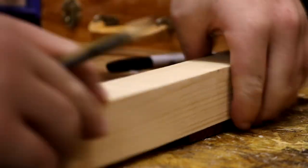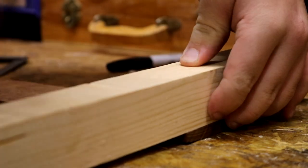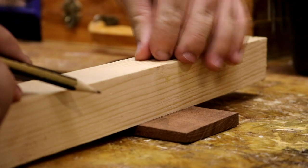I had some offcut of dark hardwood that I wanted to use for the wedges, so I just marked this out and then cut it.